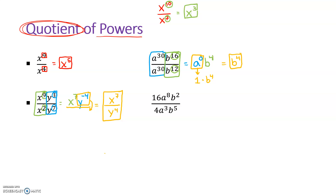We're talking about quotient of powers — that's just a fancy way to say divide. For this last one, we're going to break it up piece by piece. We look at our coefficients: 16 divided by 4. Those are just numbers in front, so that works like regular division — 16 divided by 4 is 4. Moving on to our a's: a to the eighth divided by a to the third. Since we're dividing with the same base, we subtract: 8 minus 3 gives us a to the fifth power.